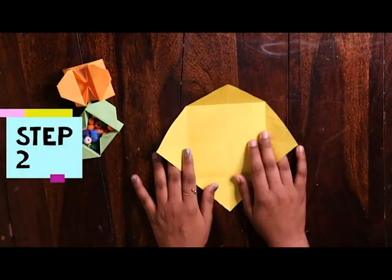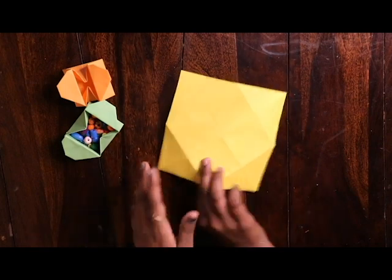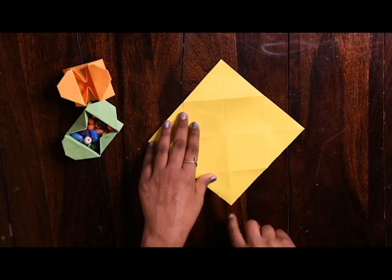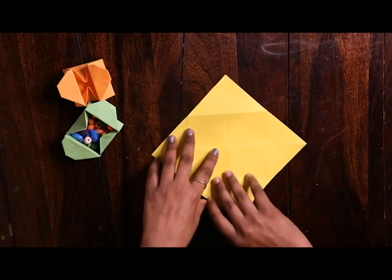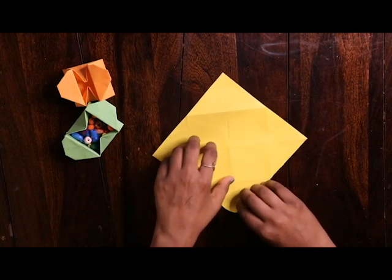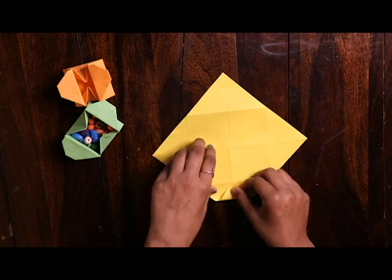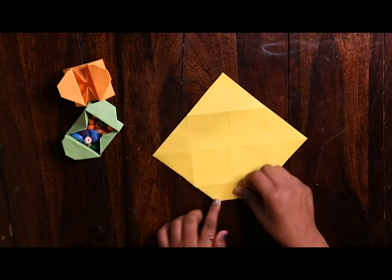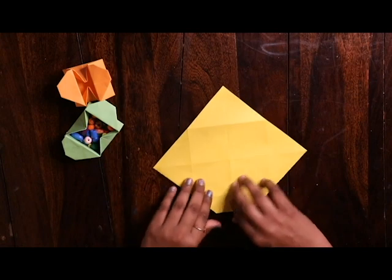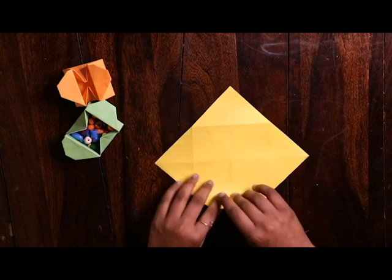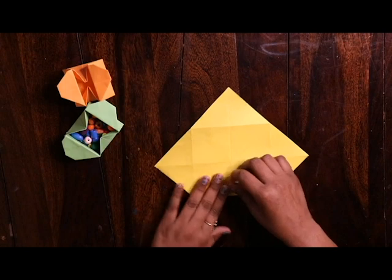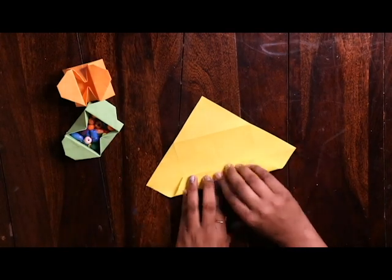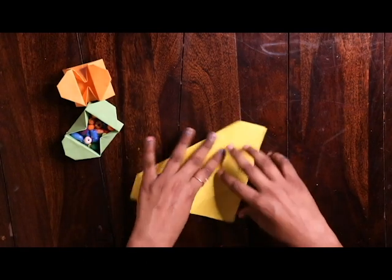Step number two: now turn it over and make sure that one of the edges is pointing towards you. Fold the edges so that the pointy edge touches this guideline like this. Then with the help of the same guideline, fold it again and then once more. Do the same with the other side.